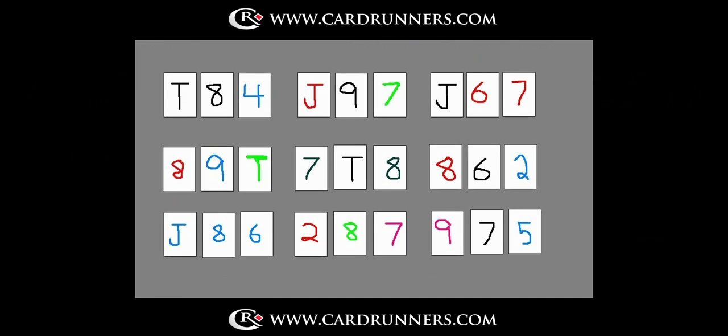Let's take a look at some boards where I don't think it's very good to make a continuation bet. Here I have this nice little graphic of flops. I apologize there's no rabbits here. We've got stuff like 10-8-4 two-tone, Jack-9-7 rainbow, Jack-6-7 two-tone, 8-9-10 rainbow, 7-10-8 monotone, 8-6 deuce rainbow, Jack-8-6 monotone, deuce 8-7 rainbow, and 9-7-5 rainbow.